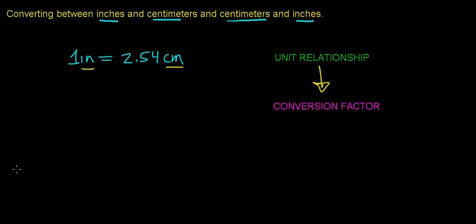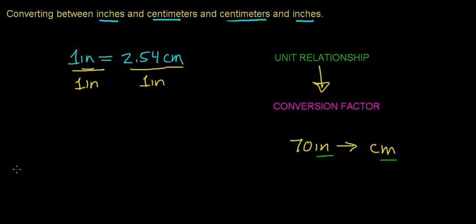So in this case, I'm going to come up with a conversion factor to convert 70 inches to units of centimeters. I need a conversion factor that takes me from units of inches to centimeters. In order to do that, I'm going to divide both sides of this relationship — or equation — by one inch. What you do to one side of an equation, you have to do to the other. Any number divided by itself equals one, so one inch divided by one inch equals one. We can now rewrite this relationship as: 1 equals 2.54 centimeters divided by one inch.